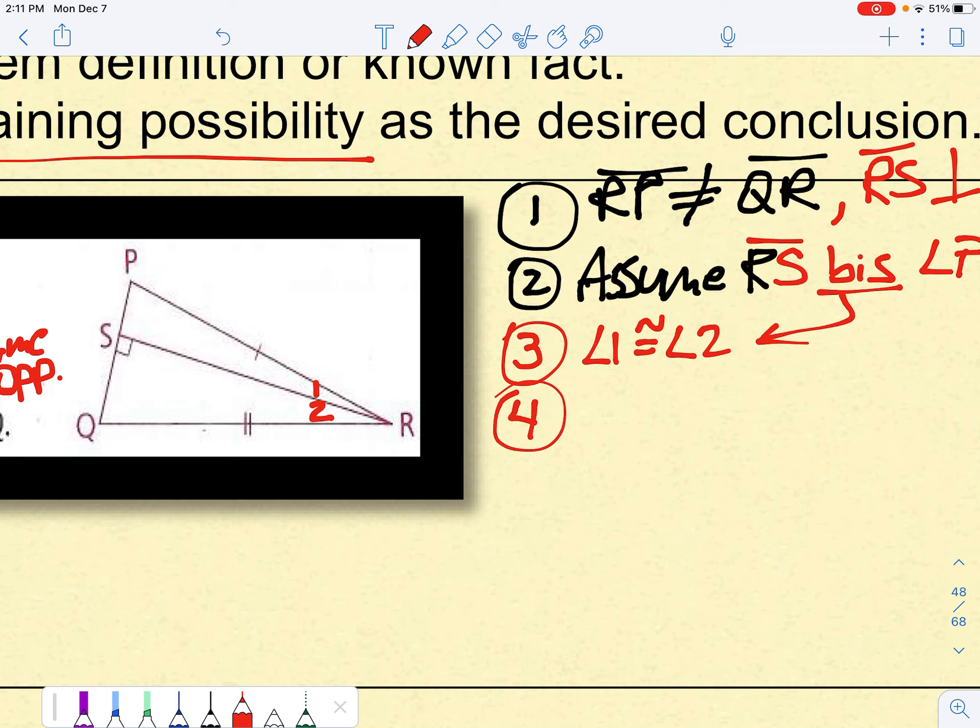All right. Well, if the angles are the same, let's see if we can get a couple of triangles to be congruent. It always seems to be a good strategy. So there's the shared side, by reflexive.